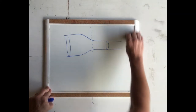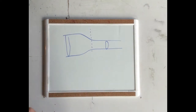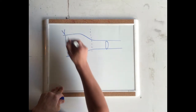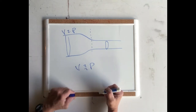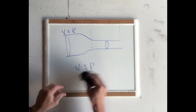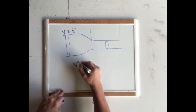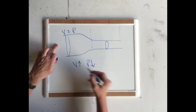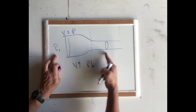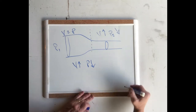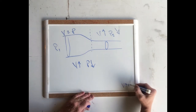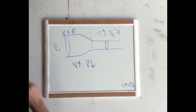A man named Bernoulli figured out something very interesting called the Bernoulli principle. The formulas were derived later by another scientist, but Bernoulli figured out that velocity and pressure are proportional to one another when talking about fluids — and air is one of our fluids. As velocity goes up, pressure goes down. So in our constricted pipe example, the pressure of the fluid at the constricted end has gone down because the velocity has gone up. Remember: velocity up → pressure down. That's Bernoulli's principle.